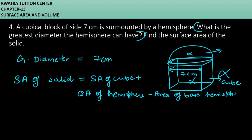What is the surface area of cube? 6a². What is the CSA of hemisphere? It will be 2πr². Minus area of base hemisphere which is πr².